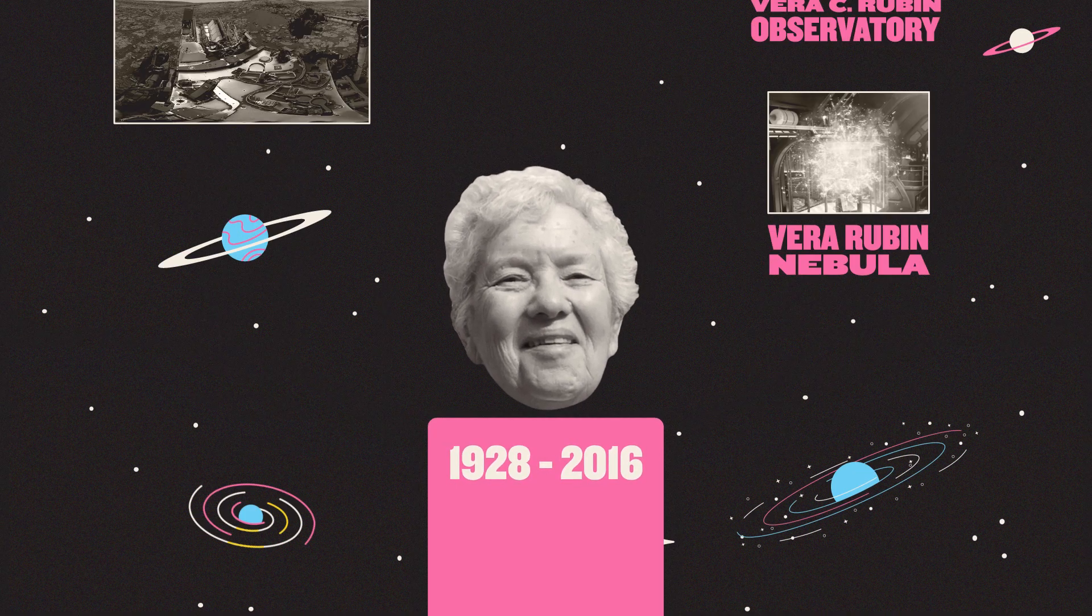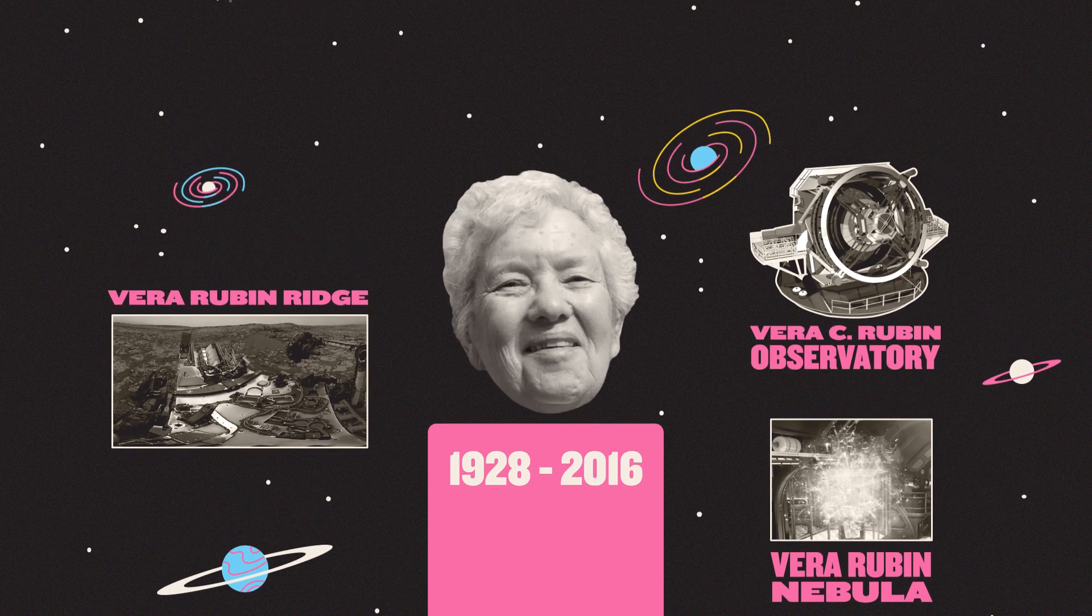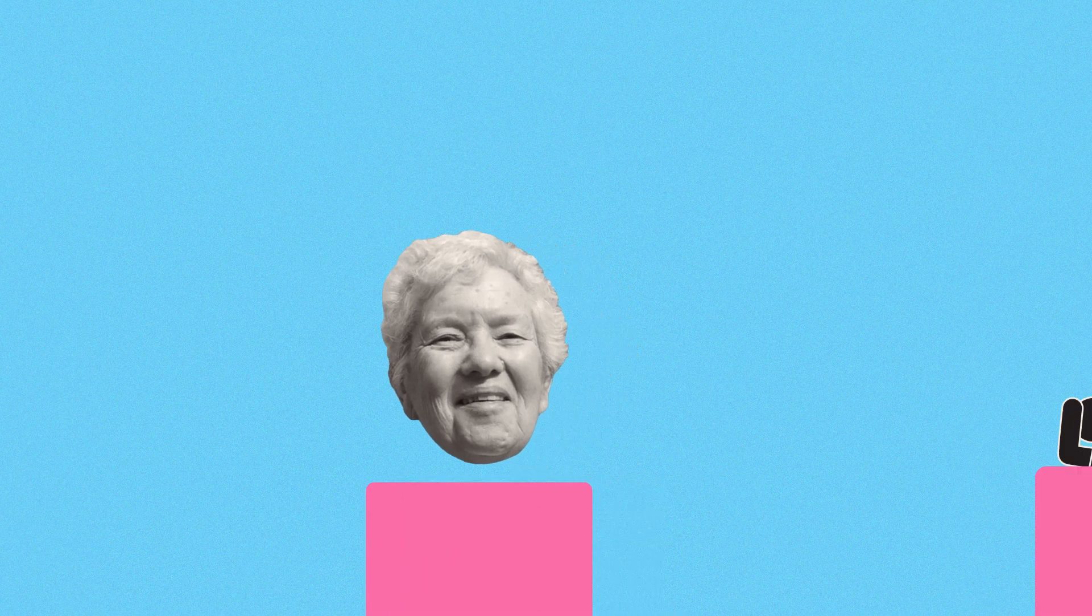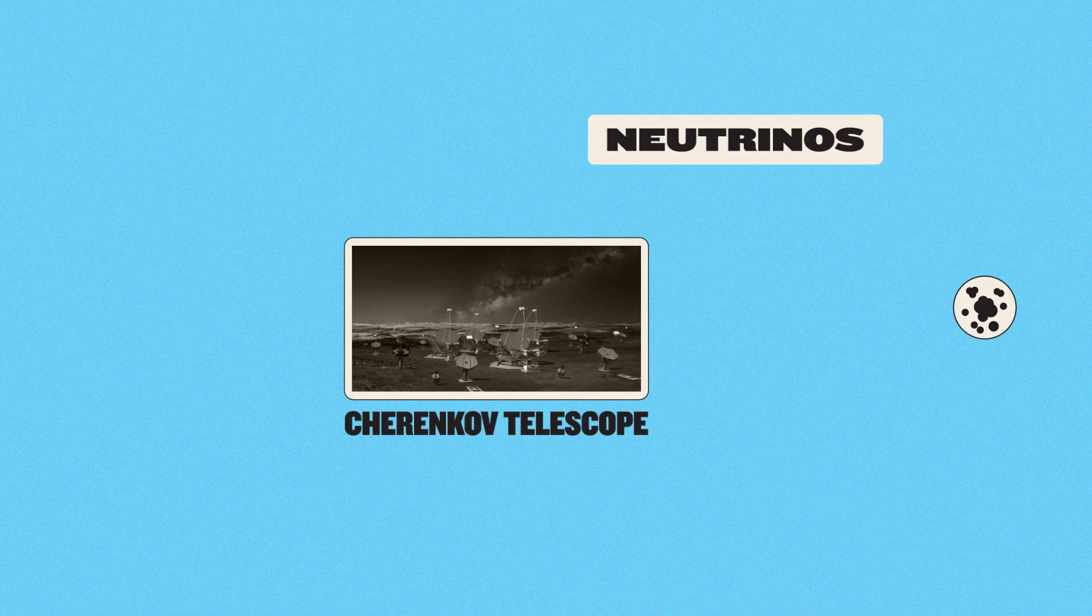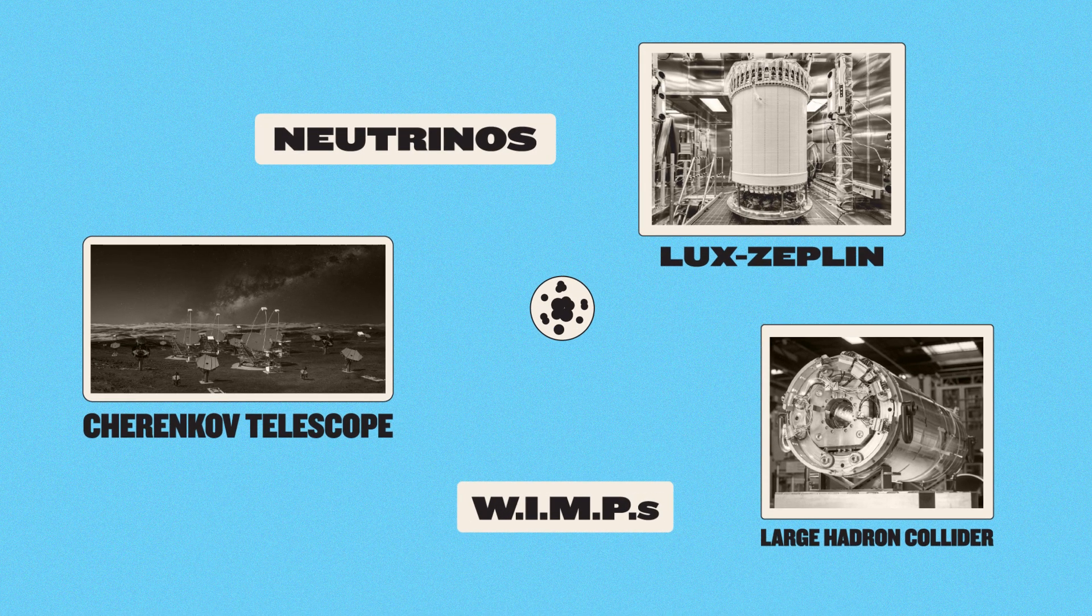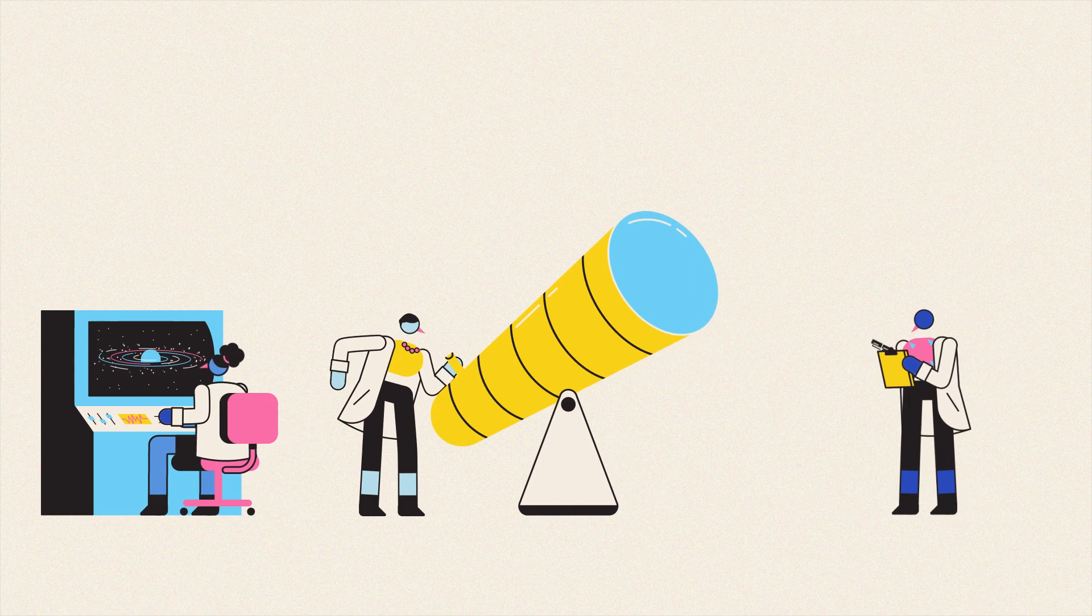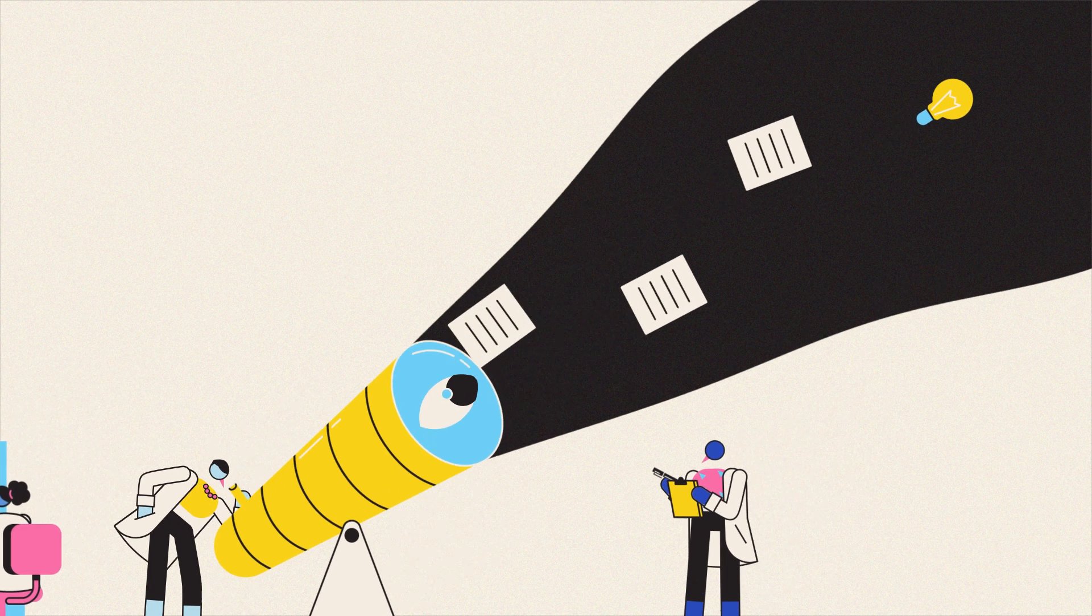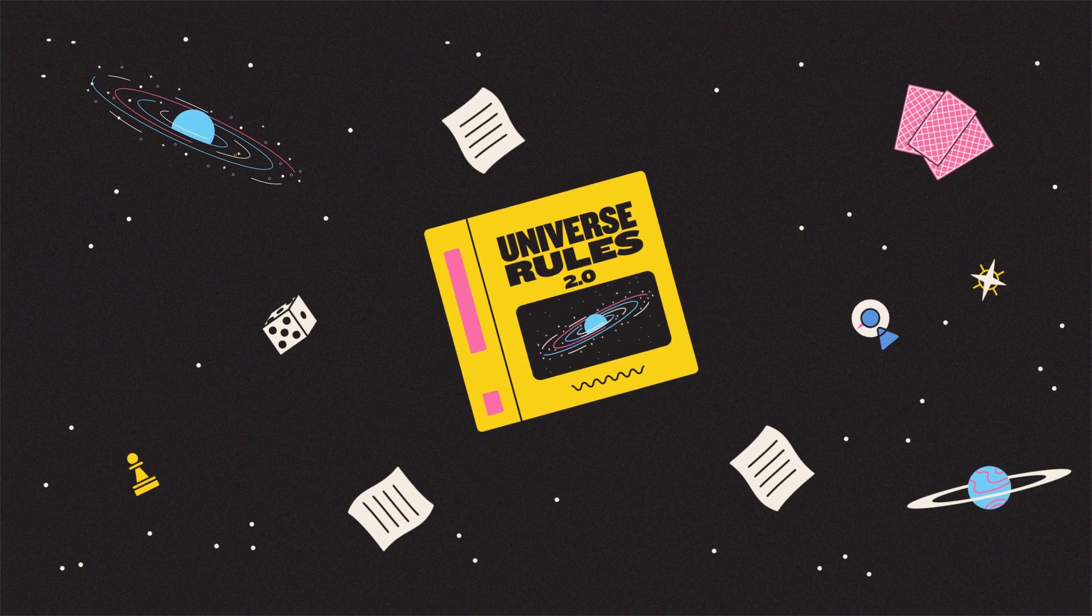Since her death in 2016, her work has been honored in numerous ways. But many argue that the recognition she received in life fell short of what she was due, in particular being consistently overlooked for a Nobel Prize. Nonetheless, the thriving research field surrounding dark matter today is testament to Rubin's work, that of her colleagues, and the idea that in science, with enough data, there's no rule that can't be rewritten.